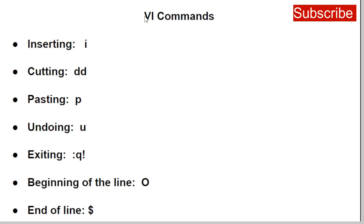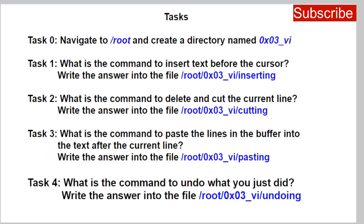These are some of the commands we'll be using when working with the VI editor. Use lowercase 'i' to insert text, double 'd' (dd) to delete and cut, lowercase 'p' to paste, lowercase 'u' to undo, ':q!' to exit a file, capital 'O' to move the cursor to the beginning of the line, and '$' to move it to the end of the line.